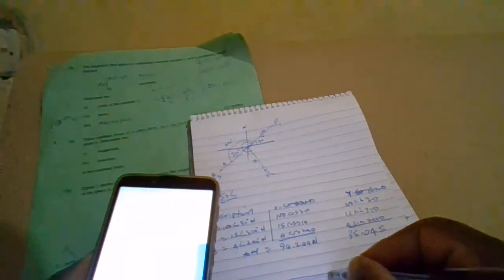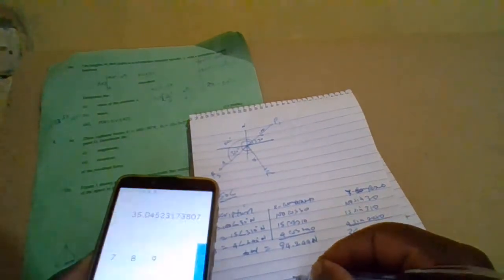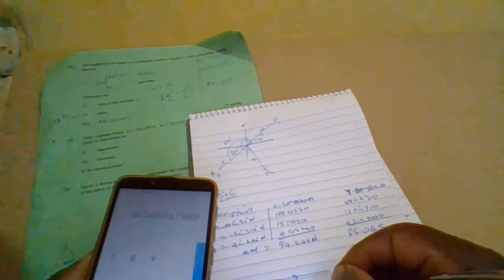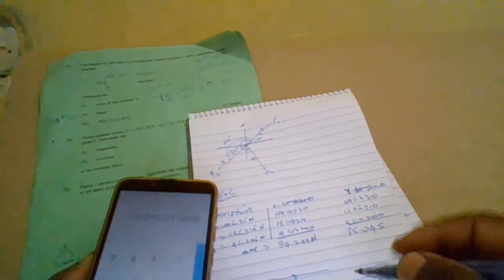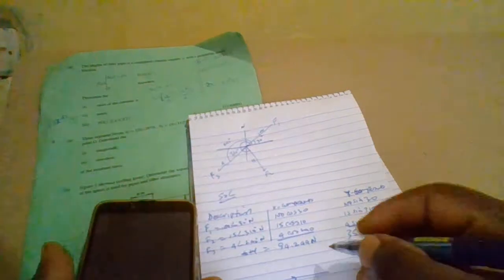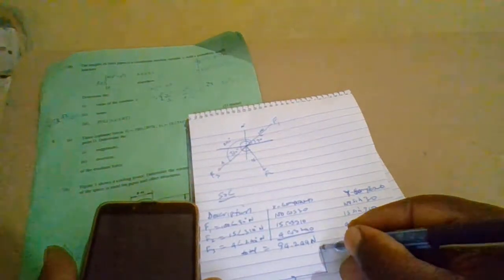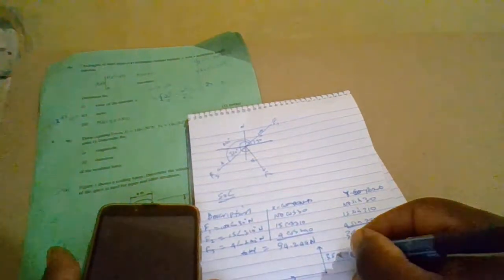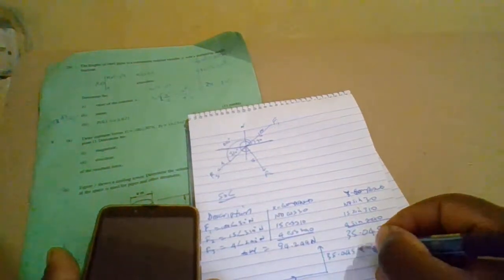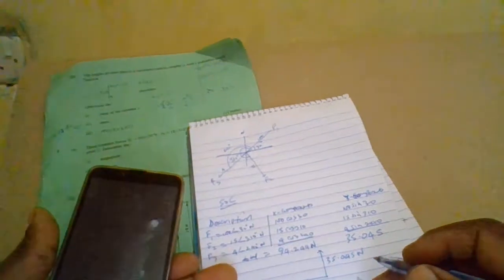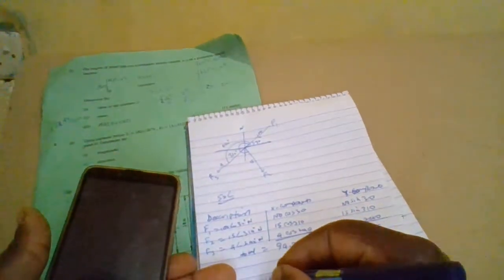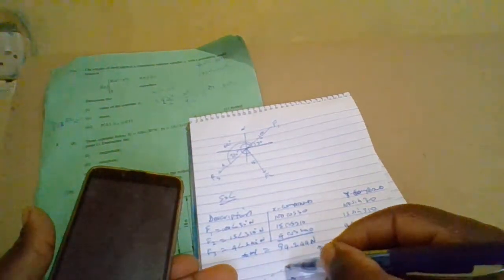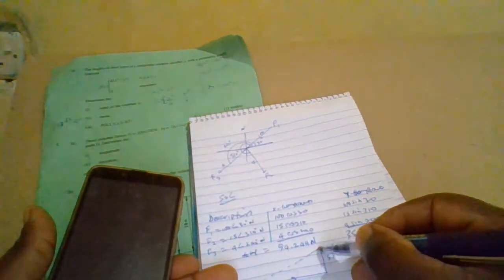Now you can see that both of them are positive, therefore we sketch these components. So this one is x-axis which is 94.24 newtons, then we can sketch y-axis at 5.045.